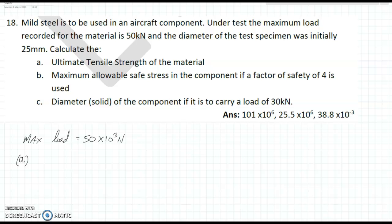Now, mild steel is to be used in an aircraft component. Under test, the maximum load recorded for the material is 50 kN, that's the max load, and the diameter of the test specimen was initially 25 mm. Calculate A, the ultimate tensile strength of the material.